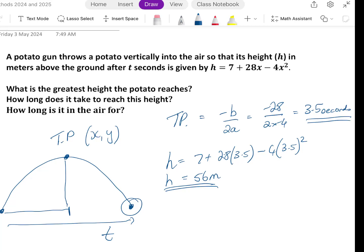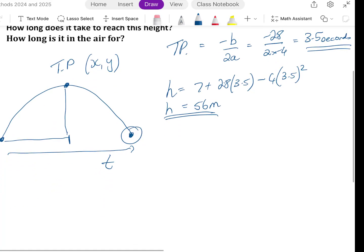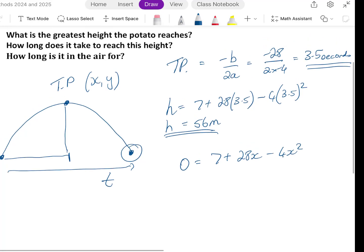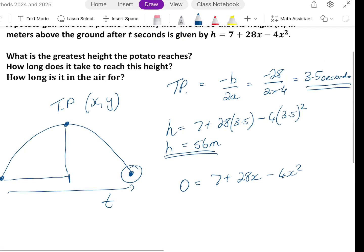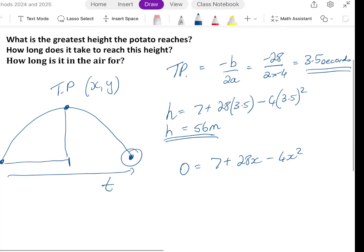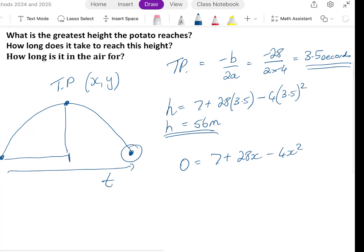It's on the ground, and we can find those by saying that 0 is equal to 7 plus 28x minus 4x squared. Now you could try and factorize this, or complete the square, or you could use the quadratic formula. After using the quadratic formula, which is negative 28 plus or minus the square root of 28 squared minus 4 times minus 4 times 7, all over 2 times minus 4.